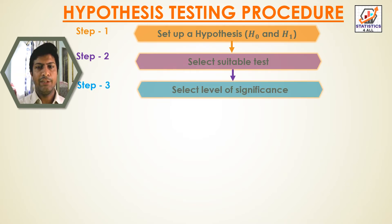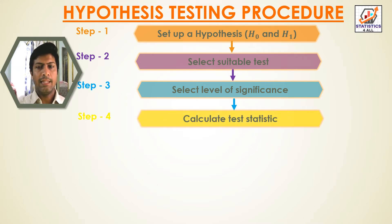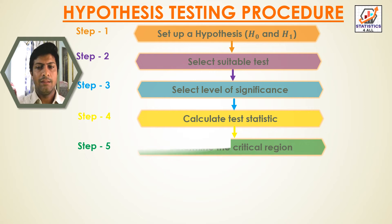Step 3: select the level of significance. Step 4: calculate the test statistic. Step 5: determine the critical region.